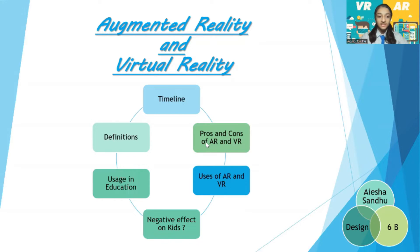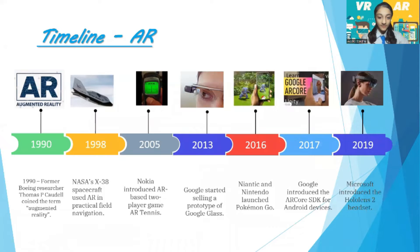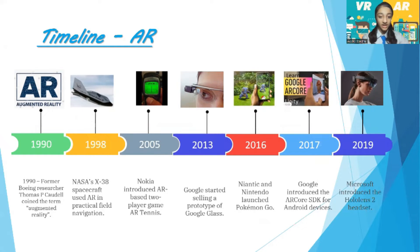Good morning, my dear friends. I am Aisha and today I'm going to speak on augmented reality and virtual reality. Augmented reality is an interactive experience of a real-world environment where objects are enhanced by computer-generated perceptual information. Virtual reality is the use of computer technology to create a simulated environment. Key dates in AR history: in 1990, former Boeing researcher Thomas P. Caudell coined the term 'augmented reality.' In 2016, Niantic and Nintendo launched Pokémon Go. In 2019, Microsoft introduced the HoloLens 2 headset.